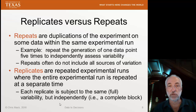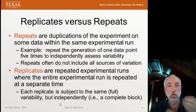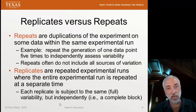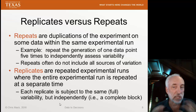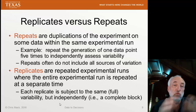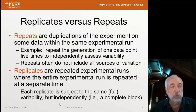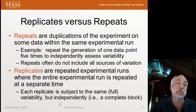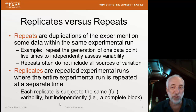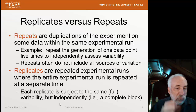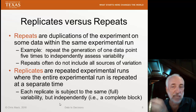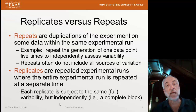Sometimes we really want to know an independent assessment of that variability in the response. But repeats often don't include all of the sources of variation — I might do a repeat right after another where I try to keep everything as constant as possible. Replicates, on the other hand, are broader. Replicates mean repeating the entire experiment — you run the whole experiment once, then a replicate means running the whole experiment again at some separate time. The nice thing about a replicate is it's subject to the full variability of the whole experiment, independently of the first time you ran it. We'll call this a complete block — I run the entire experiment as a complete block, then run it again as a second complete block. Replicates allow me to assess a full range of variability.